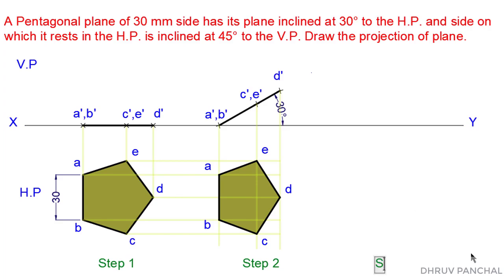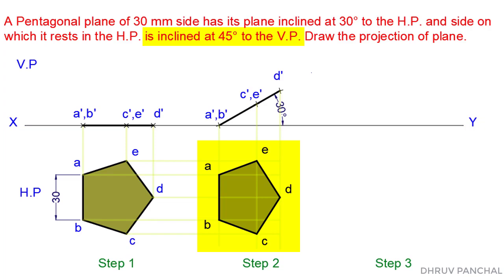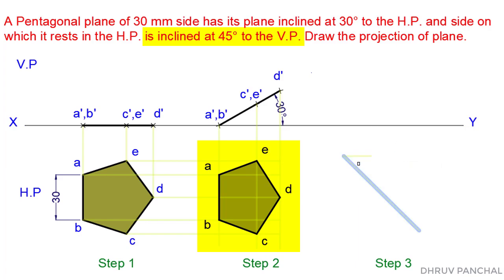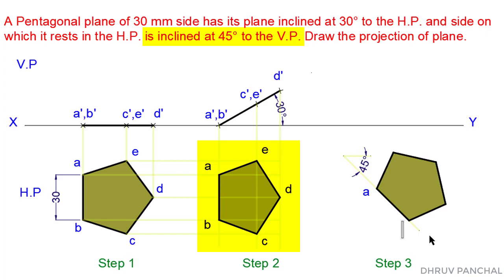In Step 3, we will consider the plane's inclination with the vertical plane. In Step 3, we will draw the top view of Step 2 at an angle of 45 degrees. For that, draw a line on line XY at an angle of 45 degrees in the horizontal plane and draw the top view from Step 2 on it. Locate points A', B', C', D', and E', as shown.